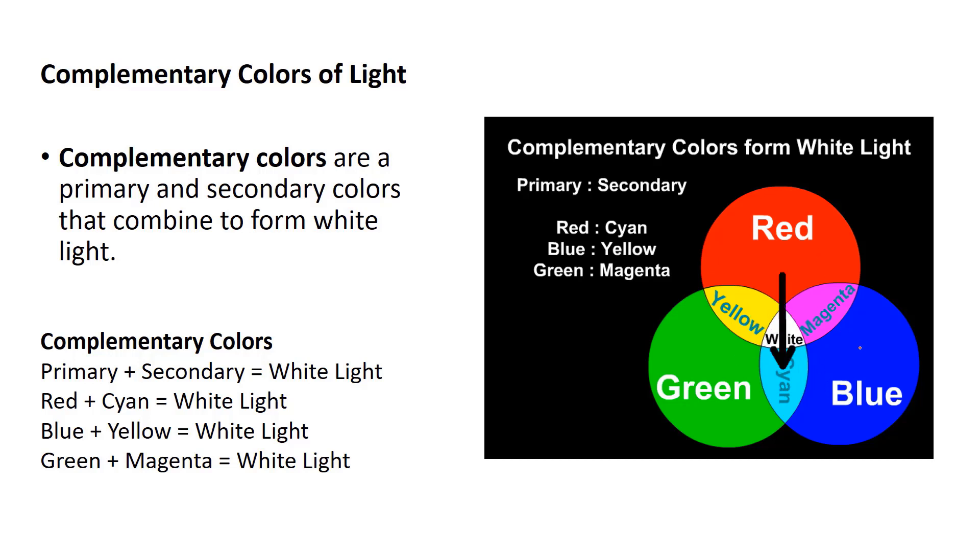Well, the thing about cyan is cyan is really green and blue together. Magenta is really red and blue together. So if I take green and I mix it with something like magenta straight across, what I'm really mixing is green, red, and blue, and therefore I get white light. So just look straight across the color wheel, and that will tell you what the complementary color is, which secondary mixes with the primary to get white light. That's what's going on, and that's what this animation is showing you.